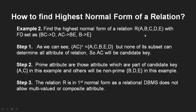Next example: relation R with attributes A, B, C, D, E and a new FD set. Finding the candidate key: AC closure gives A, C, then AC determines BE, and BC determines D, so AC closure determines all attributes. None of AC's subsets can determine all other attributes, so AC is the only candidate key. Prime attributes are A and C; non-prime attributes are B, D, and E.